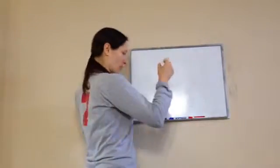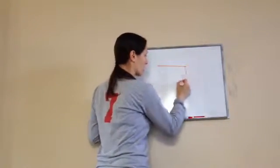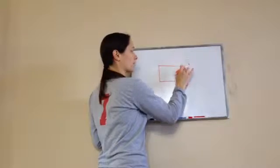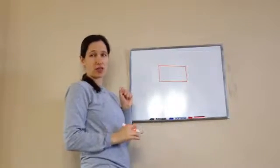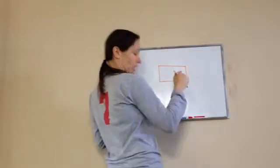So up to this point we have learned about the distance around a rectangle. Do you remember what that's called? Perimeter — very good.